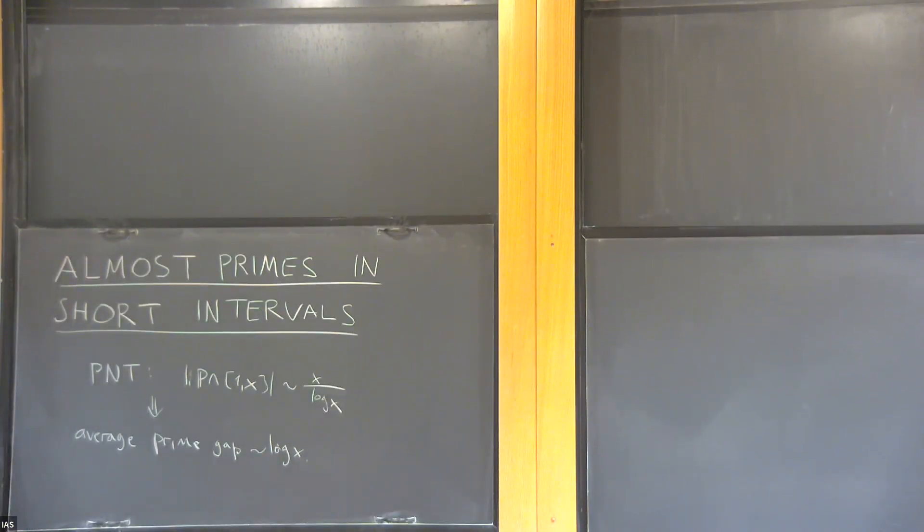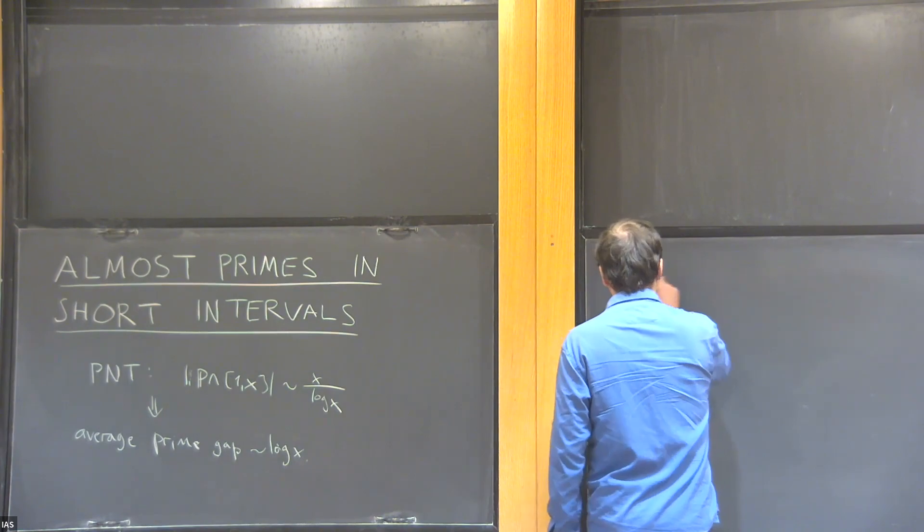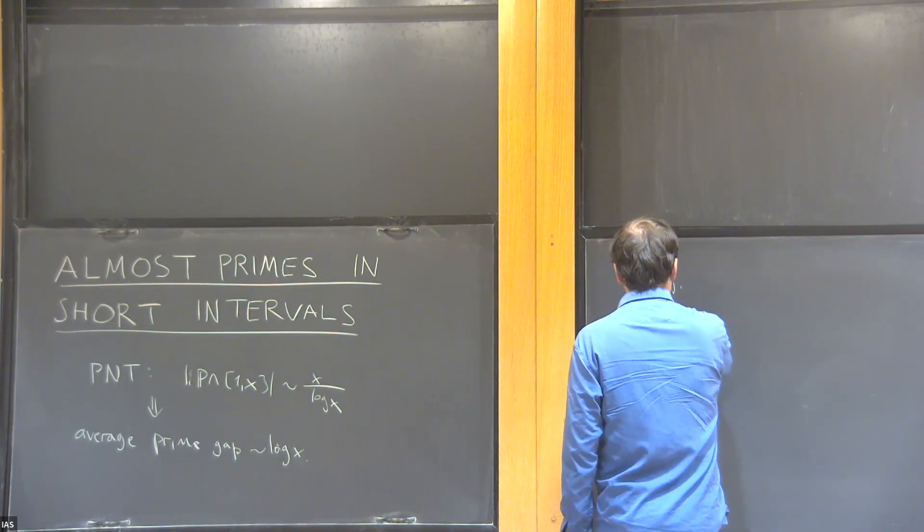What we would really like to understand is how big is the maximal gap between primes up to X, or how big is the almost maximal gap if you're allowed to throw away an epsilon proportion of bad intervals where you don't know what happens. What can you say about the largest gap between primes? And there's a conjecture which predicts exactly how large those gaps would be.